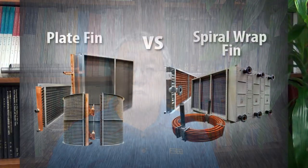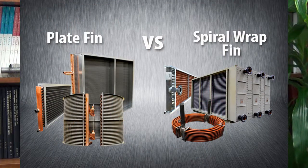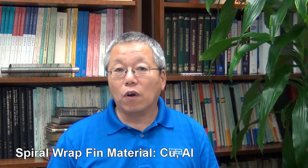Today I would like to talk about the difference between plate fin coil and the spiral fin coil. Plate fin coil can use copper, aluminum, carbon steel, and stainless steel fin. But for a spiral fin coil, copper and aluminum are popular.